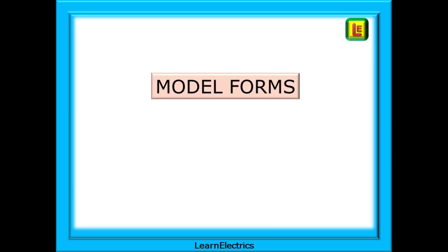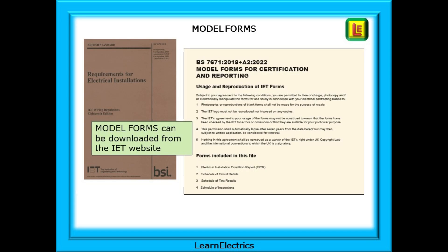We should start with the model forms for an EICR. Electrical schemes like NIC, EIC, and NAPIT produce their own forms at a cost to you. They are based on the model forms issued by the IET, and these model forms are available to you as a free PDF download from the IET website. Model forms, once downloaded, can be used free of charge for your own work and business needs. All the forms are included in the PDF — the EIC forms, minor works, and EICR, and so on — and I just print off the pages that I need.